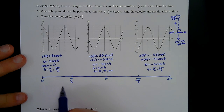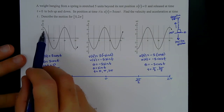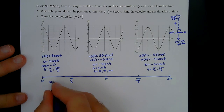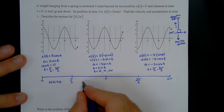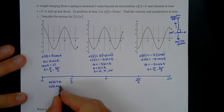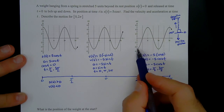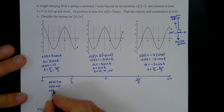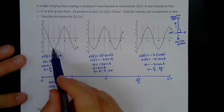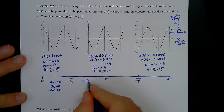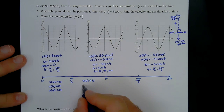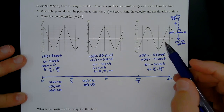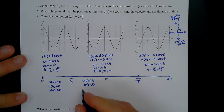From 0 to π/2: position is positive, s(t) > 0; velocity is negative, v(t) < 0; and acceleration is also negative, a(t) < 0. From π/2 to π: position is negative, s(t) < 0; velocity is also negative, v(t) < 0; and acceleration is positive, a(t) > 0.